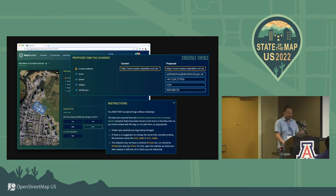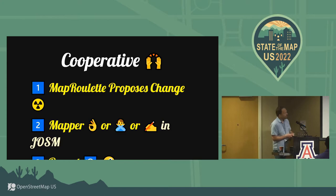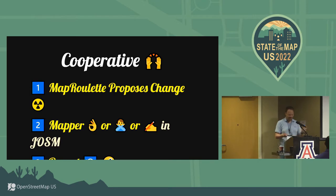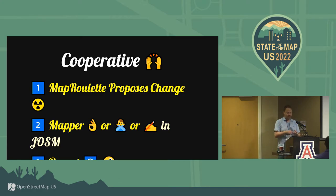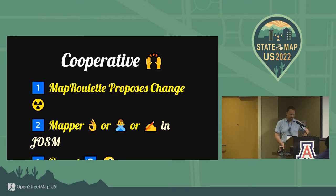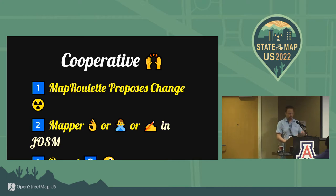That's basically the second iteration. The third one takes this a step further — it's the cooperative challenge. MapRoulette proposes an entire changeset that's already pre-baked. The mapper goes to JOSM — this only works in JOSM currently, though I'd like to make it work with iD at some point. The changeset gets carried over into JOSM with all the features and proposed changes, and the mapper can then edit them or accept them as-is, go back to MapRoulette, and move on to the next one.